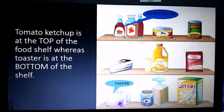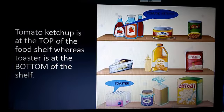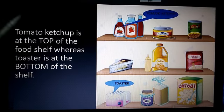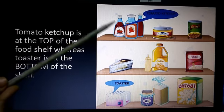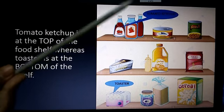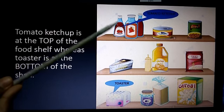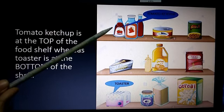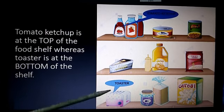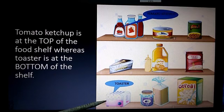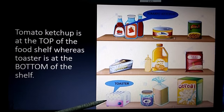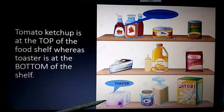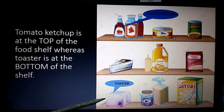Likewise, moving to our next example, tomato ketchup is kept at the top of the food shelf whereas the toaster is kept at the bottom of the food shelf.